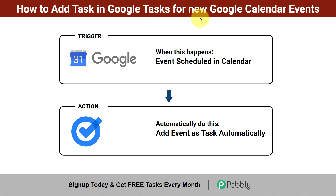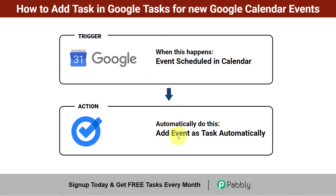How to add tasks in Google Tasks for new Google Calendar events automatically. Whenever you schedule any event in Google Calendar, the same event will be added as a task automatically in Google Tasks. In this way, you will always be up to date about every upcoming event scheduled in Google Calendar from Google Tasks itself, whether it is about an important flight booking or attending a meeting with the team. If you also want to sync your Google Calendar events with Google Tasks, come with me and I will show you everything step by step.